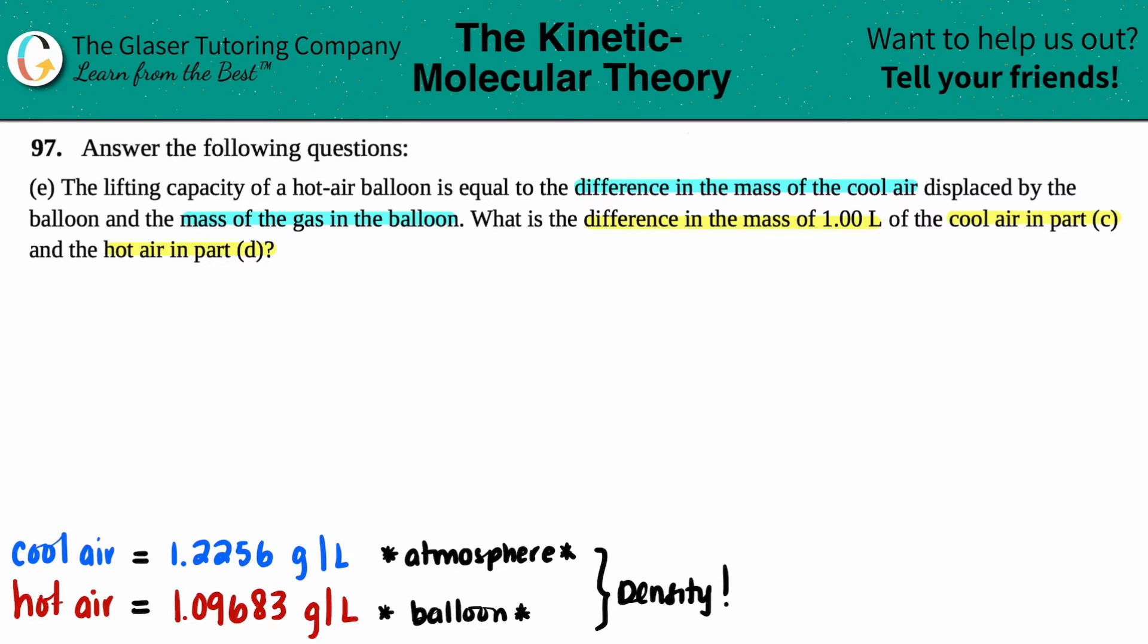All we have to do is find the difference between them, and that's the lifting capacity. Remember, difference just means subtract. So all we have to do here is subtract the masses of one liter of the cool air and the hot air. Mass can never be negative, you can never have a negative mass, so you're always going to subtract the bigger number from the smaller number.